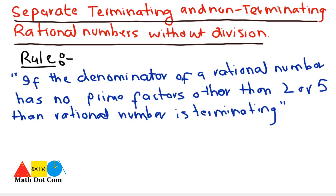Otherwise, other than this rule, the given rational number will be non-terminating. Let's have an example to get the concept clear.